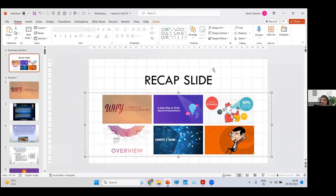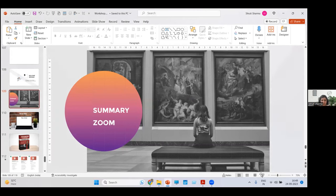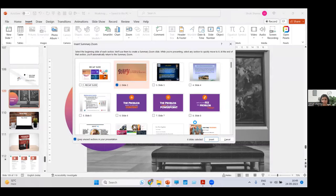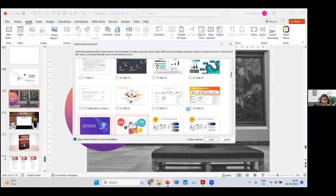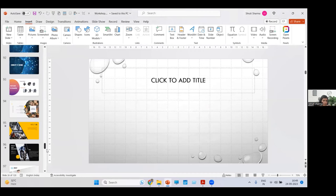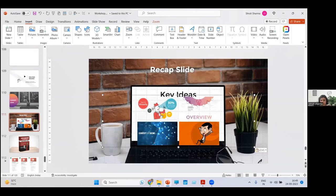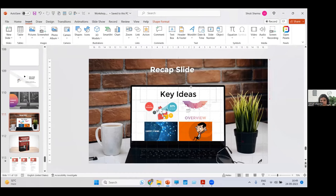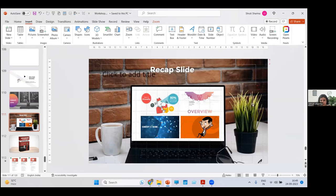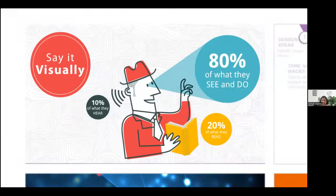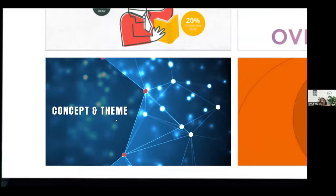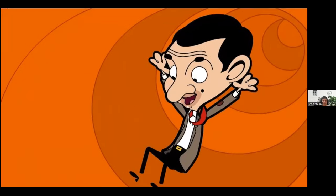Another thing you can do with Summary Zoom: once it creates the summary slide, you can copy the thumbnails and place them on any existing slide. For example, place four slide thumbnails on a data slide — nobody would guess that slide would be so interactive. You can click into any of them, highlight points, and come back. Think creatively about where to place it — on data, numbers, or anything you want to highlight at the end.